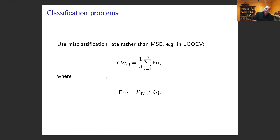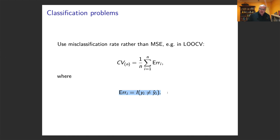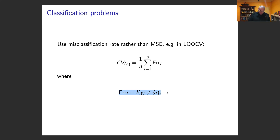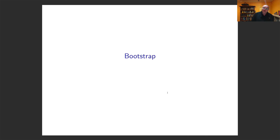For classification problems, instead of mean square error we use an error rate: simply counting how many times the model got the prediction wrong. For example, predicting a success when the truth was a failure, or predicting a cat when the truth was a dog. We'll see more misclassification error metrics as we go along.